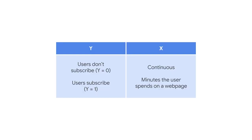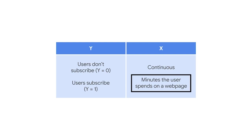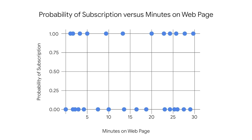Logistic regression is a technique that models a categorical variable based on one or more independent variables. The dependent variable can have two or more possible discrete values. Let's say that your company has a newsletter and is interested in increasing readership. On the company website, users have the opportunity to subscribe to the newsletter. One factor related to the newsletter subscription could be how many minutes the user spends on the webpage before leaving. Our dependent variable Y has two possibilities: users don't subscribe, represented with a 0, or users do subscribe, represented with a 1. Our independent variable X is continuous and measures how many minutes the users spend on the webpage before leaving.